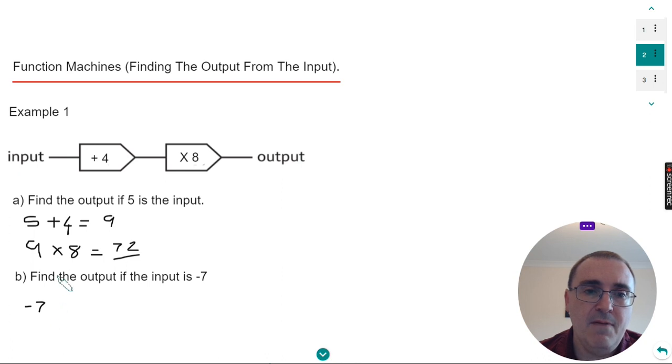Write minus seven down first as the input. The first operation is to add four. So minus seven add four takes us up to minus three.